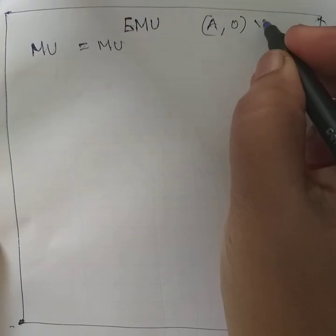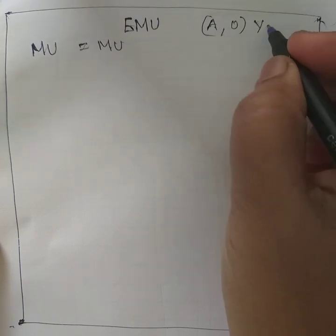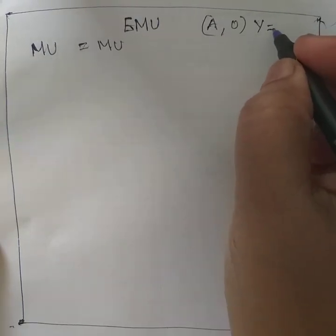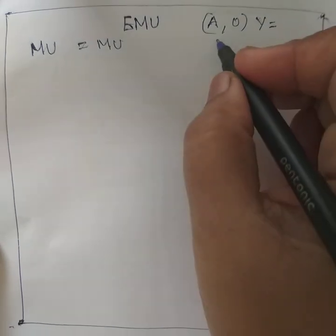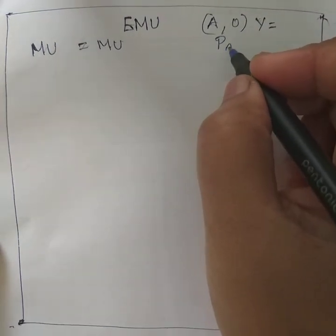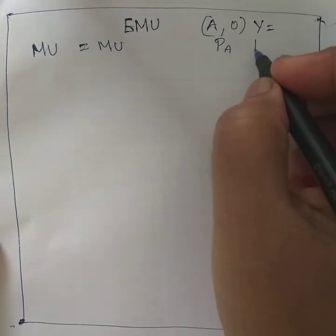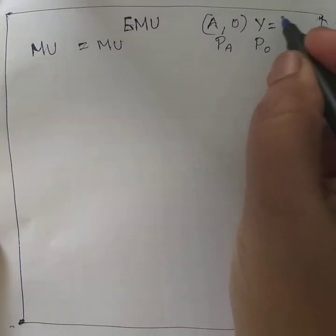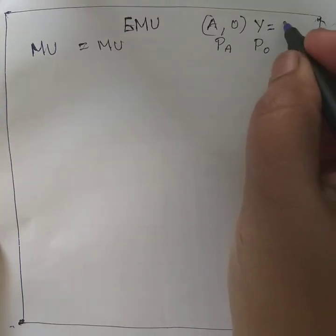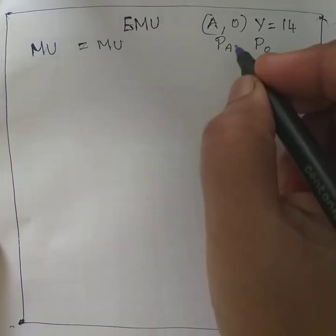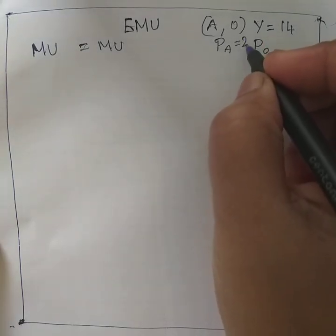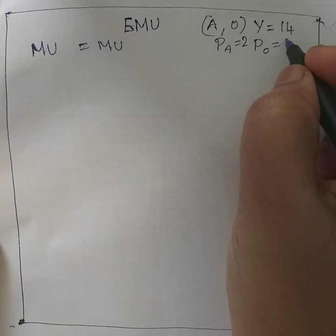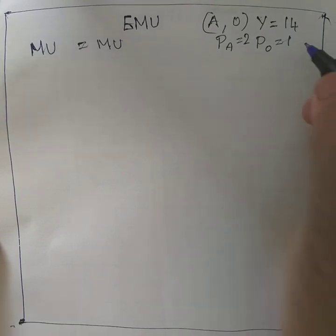In microeconomics, there are some assumptions made. In this particular theory, income is held to be constant. The price of both commodities — namely the price of apple and the price of orange — is also held to be constant. Let us assume income to be 14, price of apple to be 2, and price of orange to be 1.